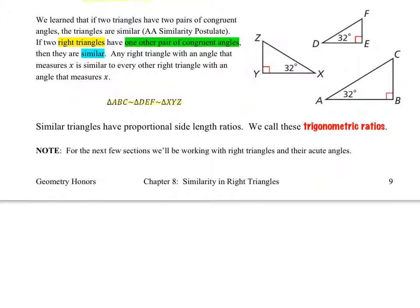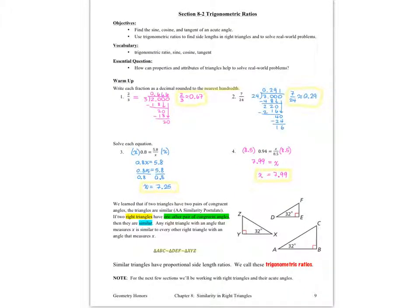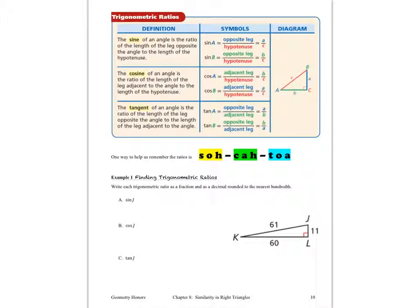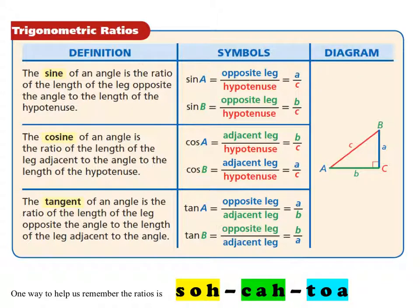For the next few sections, we'll be working with right triangles and their acute angles. Let's take a look at the box on the next page that describes the trigonometric ratios we'll be working with first. In the box, you can see the trigonometric ratios. Let's do a quick recap on how we name the sides of the triangle. When we have vertex A of the triangle, if we look to the only side that does not make angle A — that does not help form angle A — that side is what we call the opposite side to angle A.